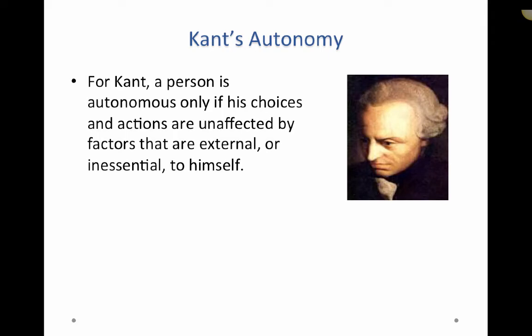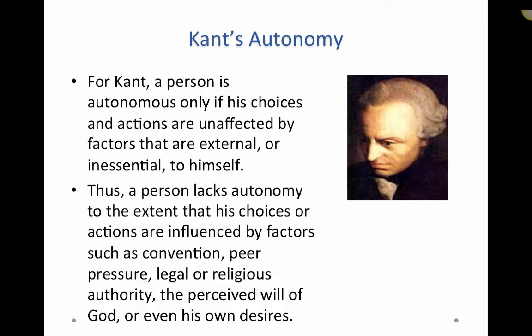For Kant, a person is autonomous only if his choices and actions are unaffected by factors that are external or inessential to himself. Thus, a person lacks autonomy to the extent that his choices or actions are influenced by factors such as convention, peer pressure, legal or religious authority, the perceived will of God, or even his own desires.